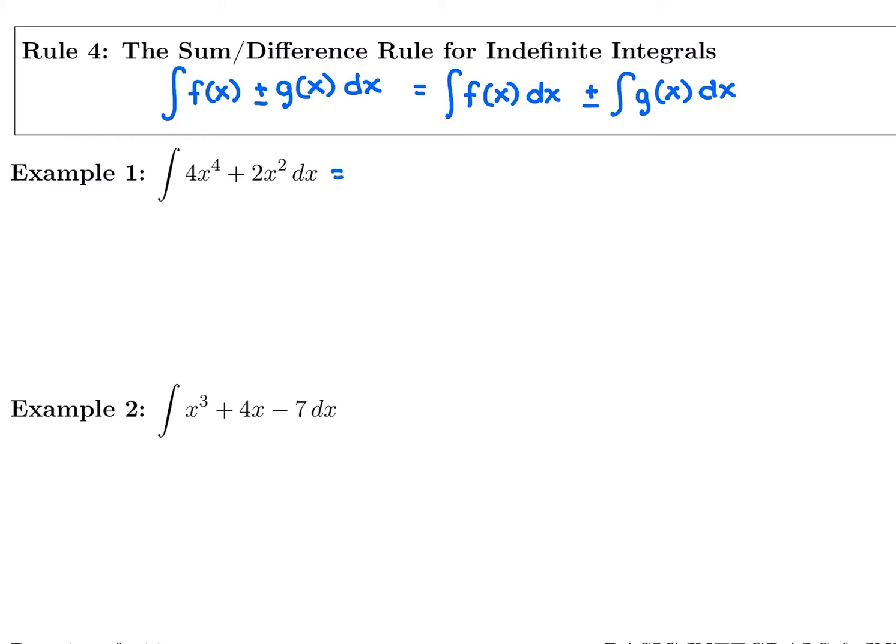We have a couple things inside our integrand. And we have 4x to the 4th. So first thing I would do is I would keep that constant multiple, 4, and then add 1 to my power, which was also 4. So 4 plus 1 is 5. We'd have 4 over 5x to the 5. Plus, now I'm going to take the antiderivative of 2x squared. I'm going to keep the constant multiple, 2. Add 1 to my power, 2 plus 1 is 3.